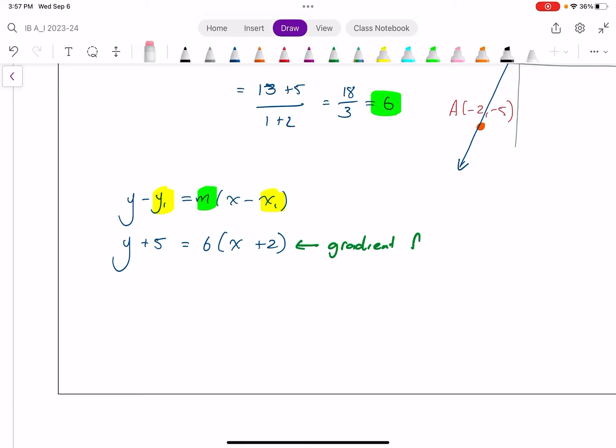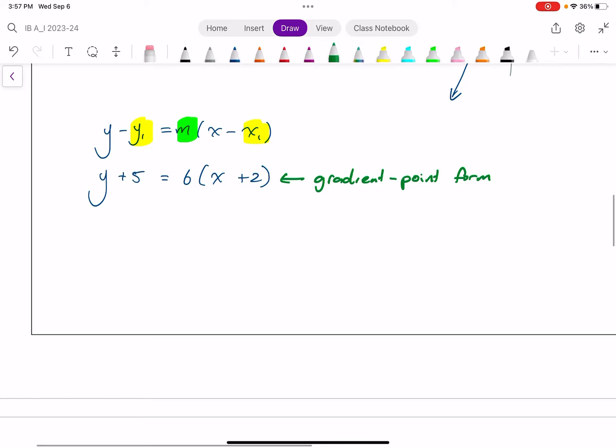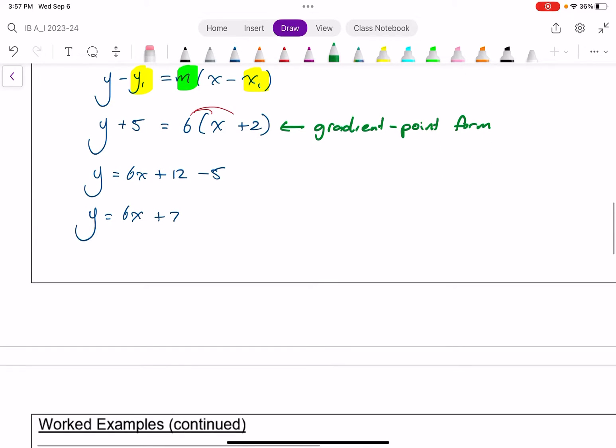There we go. There's our equation in gradient point form. All right, next, I ask for it in gradient intercept form or slope intercept form, which is one of the most standard ways of expressing a linear equation. So I'll distribute this and bring the 5 over. So I get y equals 6x plus 12 minus 5, or y equals 6x plus 7. And this is what we call slope intercept form or gradient intercept form.